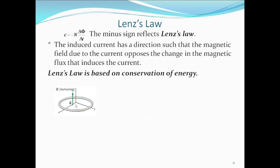Consider a horizontal coil in a plane. If there is a magnetic field directed upward with increasing magnitude, as this magnitude increases, the induced current will oppose that increase.